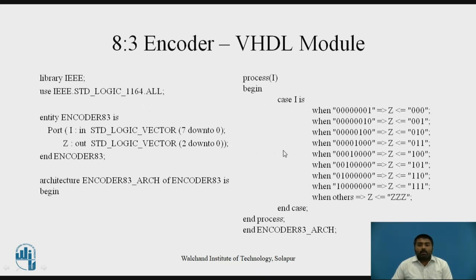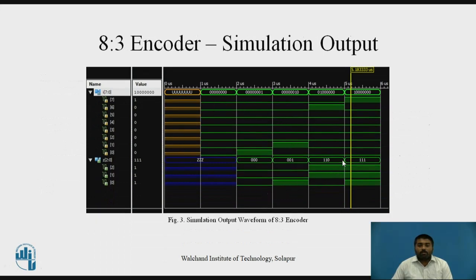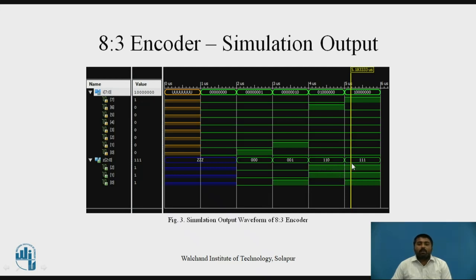You can use any simulator available in the market. Run the simulation and verify with the help of waveforms. You will get output like this — the 8-bit input is shown along with individual bits, and the 3-bit output is shown bitwise. When the input is all 'U' (undefined), the 'when others' case triggers and the output is ZZZ (high impedance). As each input condition satisfies a case, the output changes accordingly: 000, then 001, then 110, then all 1s — verifying that the VHDL module is working correctly.